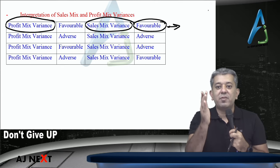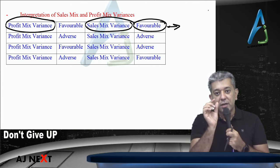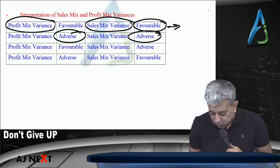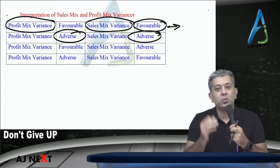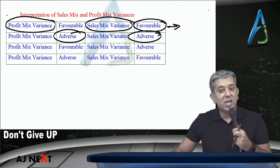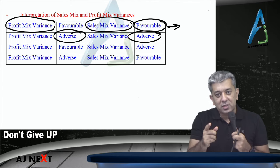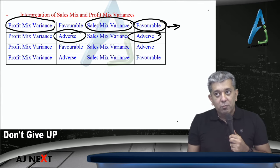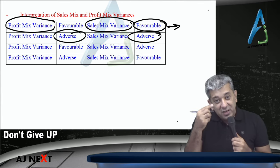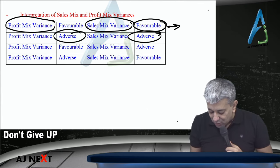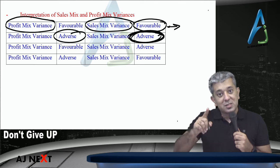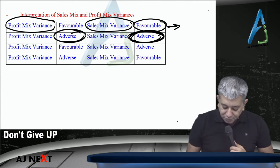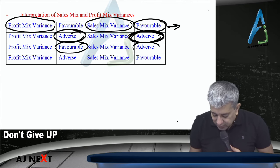If there are two products in a question: first case — profit mix variance favorable and sales mix variance also favorable. That means you have changed the ratio in favor of those products which have higher profit. So profit went up. And since those products with higher profit also have higher selling price, the sales variance also became favorable.